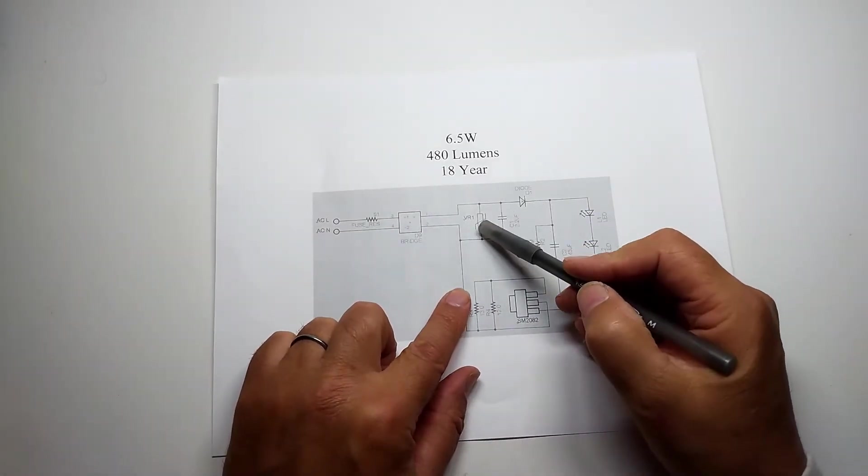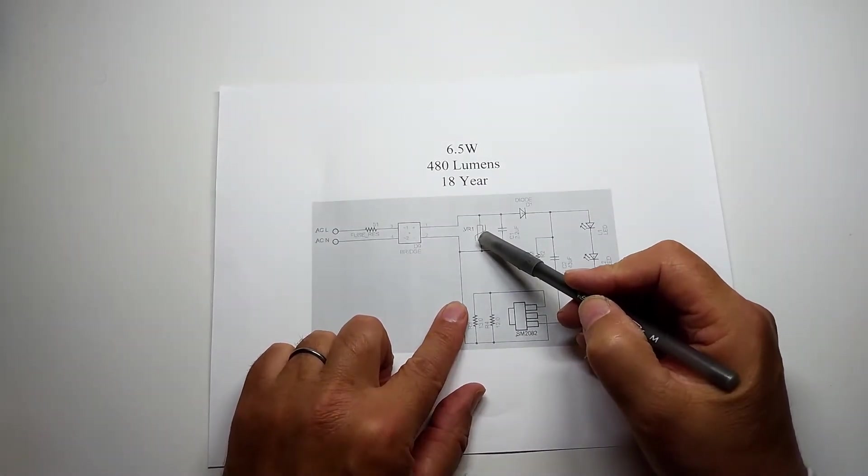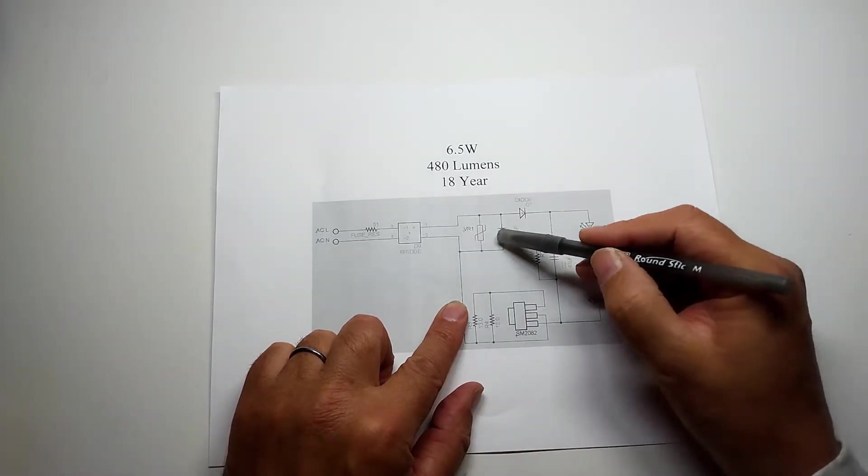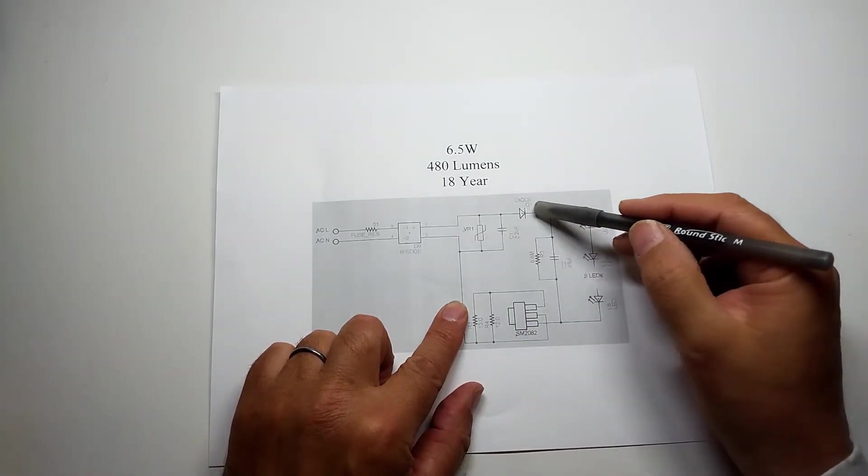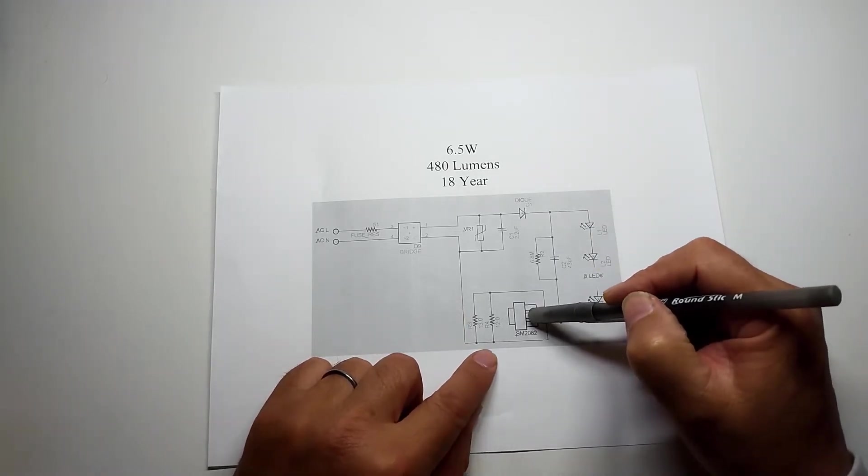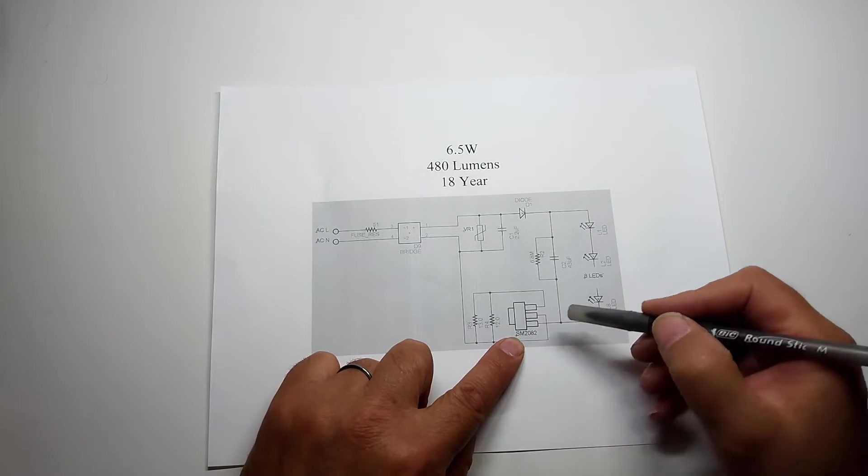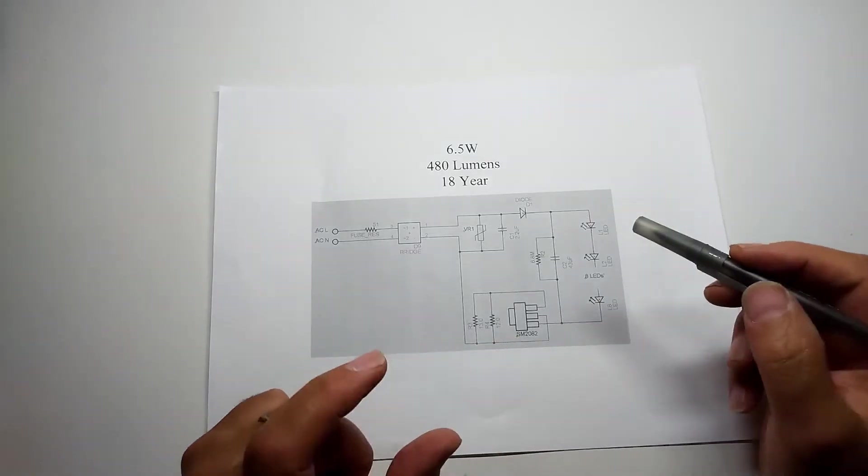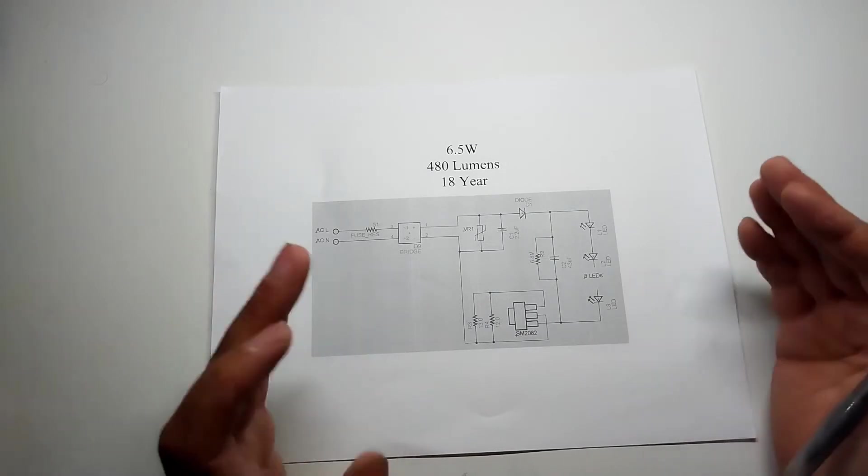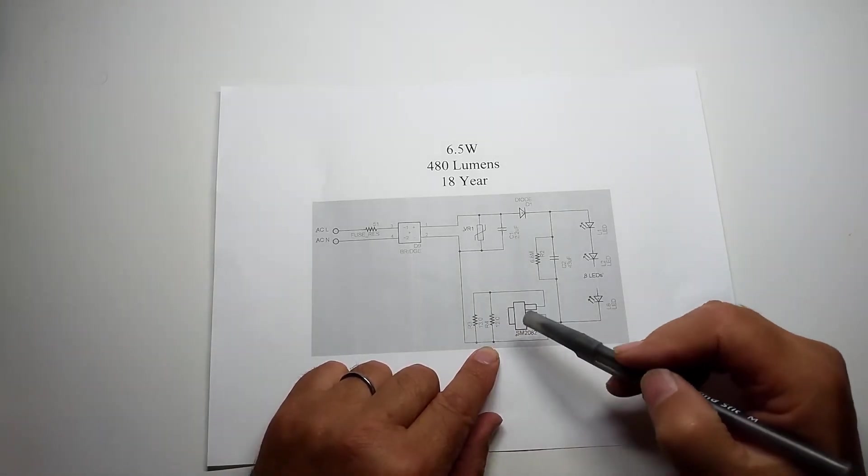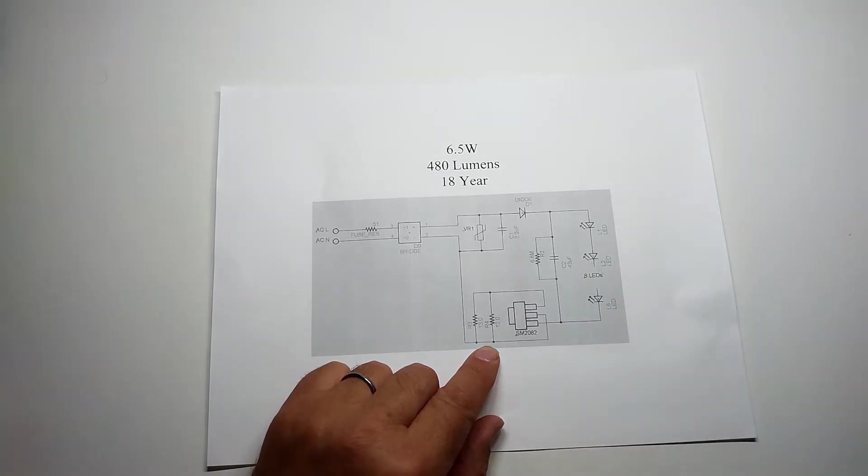Resistor, bridge. They added a varistor which helps reduce the noise that gets into the circuit. Two caps for ripple reduction, a diode, LEDs, and the current limiting device which is similar to an SM2082. The markings were on the chips but I was unable to cross-reference it. But once again you see there's two resistors to set the current in the LEDs.